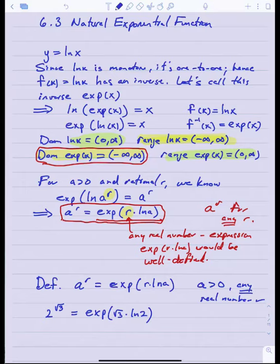For example, if I wanted to calculate that enigmatic 2 to the square root of 3, my definition would be it's the exp function with input r — which is square root of 3 — times ln of a, which would be ln of 2. We don't know yet exactly how to calculate this; we just know that there will be such a number. Since exp is a well-defined function as the inverse of the natural log, and its domain is all real numbers, there is some value when I evaluate this function at that number. That's what I'm defining to be 2 to the square root of 3.